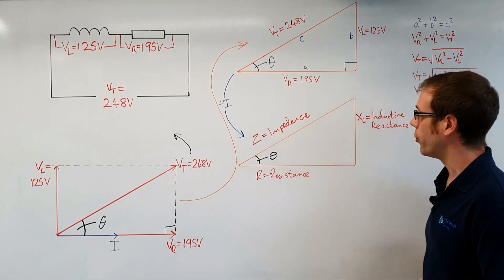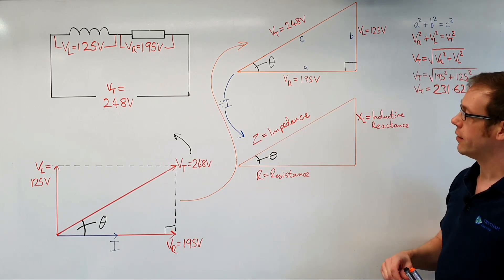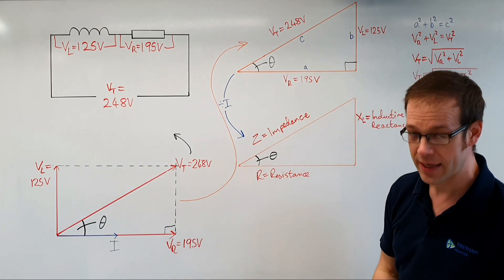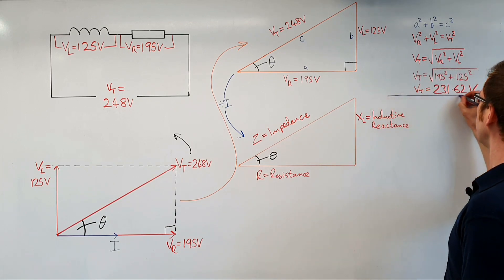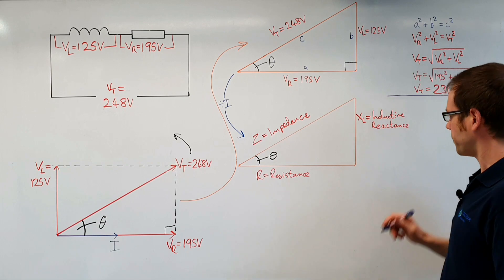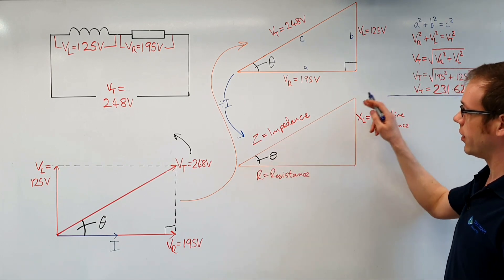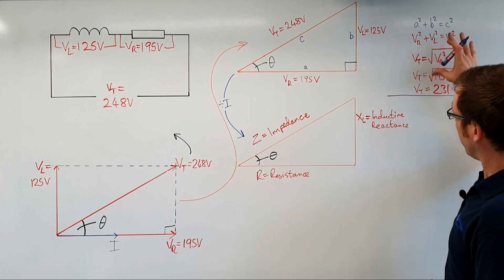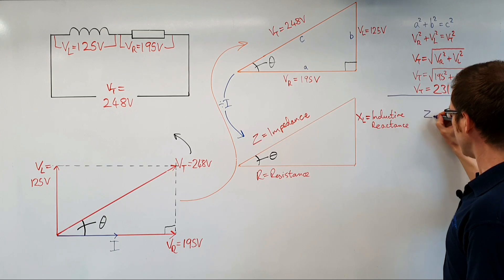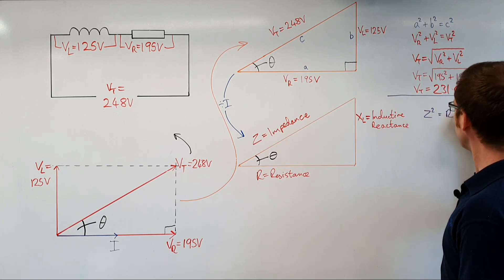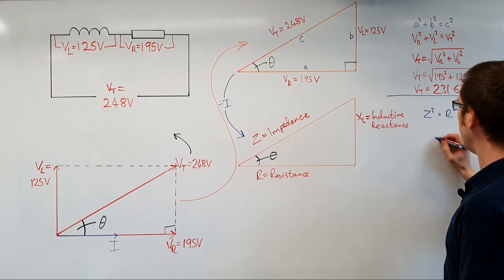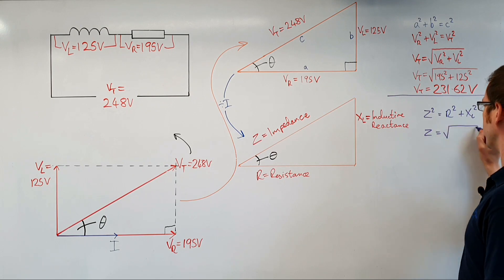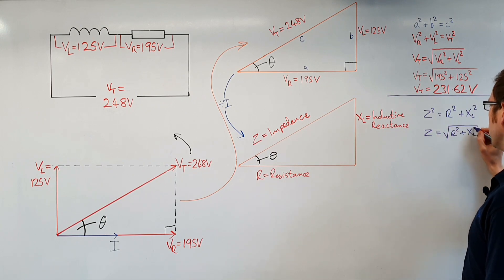Just as we saw before, there is a relationship between the sides of this triangle, and we need Pythagoras to understand it. Z is the hypotenuse — the long side of the triangle. From a previous video we know that Z squared equals R squared plus XL squared, and therefore Z equals the square root of R squared plus XL squared.